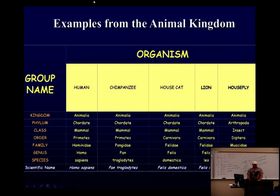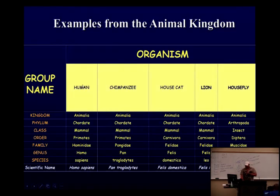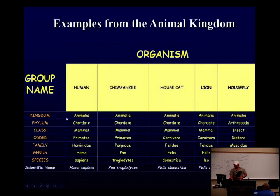Here are some examples from the animal kingdom. All of these — humans, chimpanzees, house cats, lions, and house flies — are in the kingdom Animalia. At the phylum level, humans, chimpanzees, house cats, and lions are all in phylum Chordata, meaning they have a spinal cord. The house fly has no backbone — it's in Arthropoda.